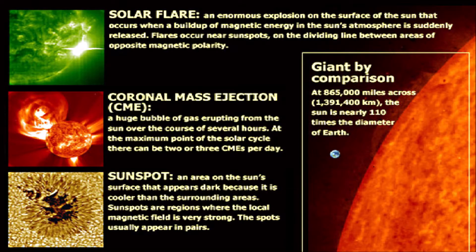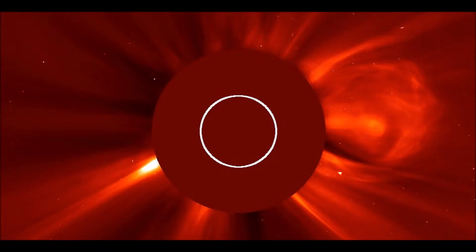Flares and CMEs are both giant eruptions on the surface of the sun, however they differ in a few ways. Flares are typically not as big of a problem, as they only release energy out into space. Coronal mass ejections are more serious, as they release not only energy but matter into space.